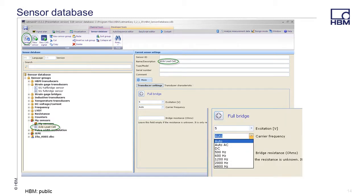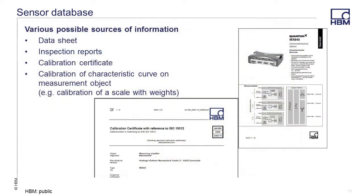The auto setting will allow the sensor to be used for amplifiers with DC or AC excitation. The options for bridge excitation are shown. If the value set is not supported by the amplifier, CATMAN EZ will provide a warning and adjust if it is possible. The bridge resistance can also be specified if it is known. Where do the characteristic transducer values for the adjustment come from? You can get them from a data sheet, inspection reports, or calibration certificates.